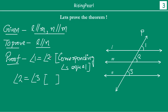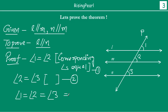So, the first equality we call equation 1, and this we call equation 2. From equation 1 and equation 2, we get that angle 1 is equal to angle 2, and angle 2 is equal to angle 3. So we can say that angle 1 is equal to angle 3. That means angle 1 and angle 3 are equal.